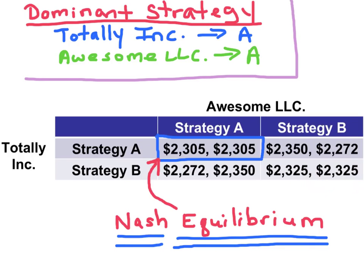When both firms play their dominant strategies — Strategy A for Totally Ink and Strategy A for Awesome LLC — we end up in the cell that is known as the Nash Equilibrium. So we know Totally Ink will end up with $2,305, and we know that Awesome LLC will also end up with $2,305.